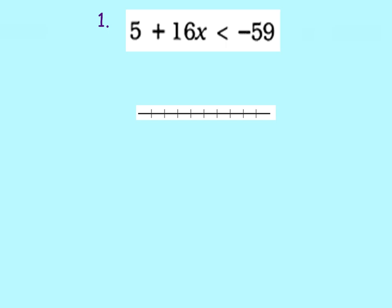Number 1, we have 5 plus 16x is less than negative 59. In this problem, we're first going to solve it just like an equation. We're going to add negative 5 to both sides.